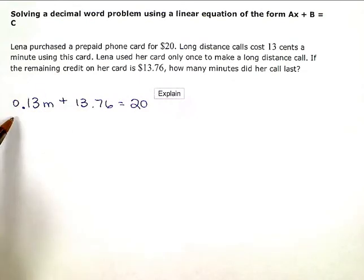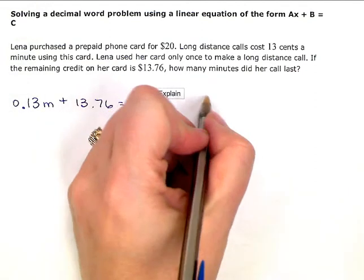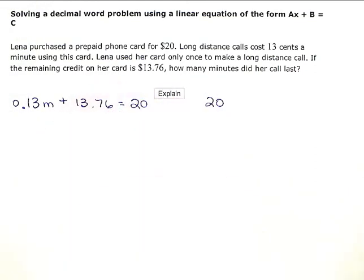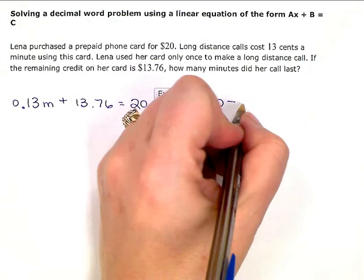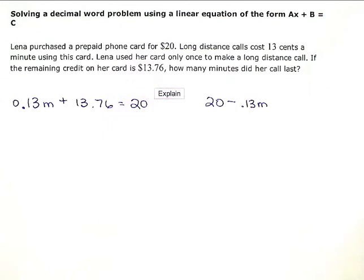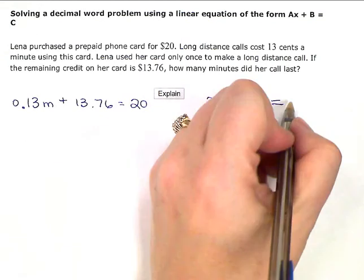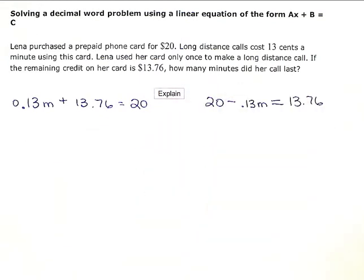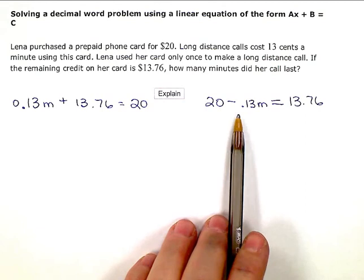I could set it up this way, or you could set it up as a subtraction and think of it like this. If I started with $20 and I subtract 13 cents every minute to make a call, I'm left with $13.76.